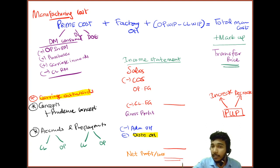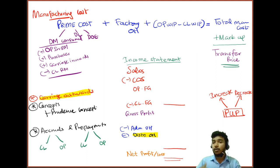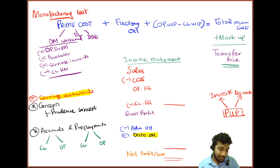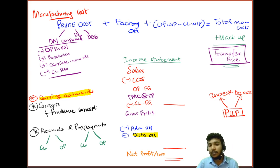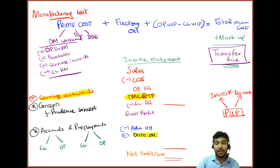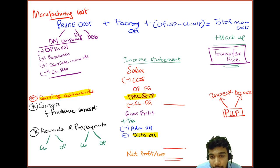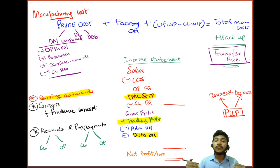This gives you total manufacturing cost, but we do not take this directly to the trading account or P&L. We add a markup as an incentive for factory workers. The factory keeps a profit and sells to the selling division or warehouse — this transaction happens internally within the company. In the income statement, the cost of sales includes total manufacturing cost valued at the transfer price. To rectify this, we add trading profit back after calculating gross profit, since it was treated as a cost inside cost of sales.